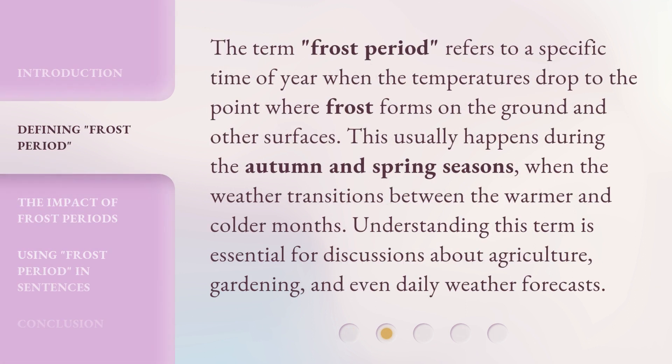The term 'frost period' refers to a specific time of year when the temperatures drop to the point where frost forms on the ground and other surfaces. This usually happens during the autumn and spring seasons, when the weather transitions between the warmer and colder months. Understanding this term is essential for discussions about agriculture, gardening, and even daily weather forecasts.